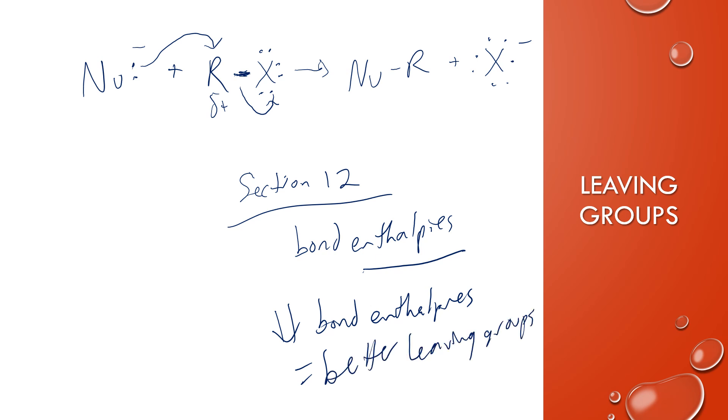And so you want to be looking at the bonds between carbon and the other thing. So like if I'm comparing carbon to chlorine, carbon to iodine, you want to look for which one has the smaller bond enthalpy. And that's going to be a better leaving group.